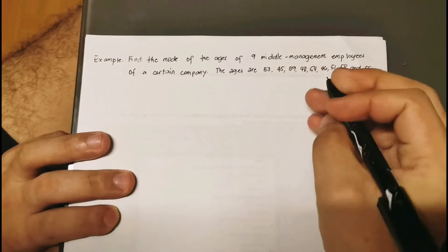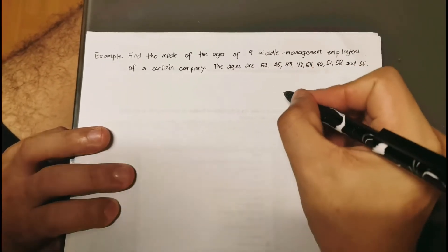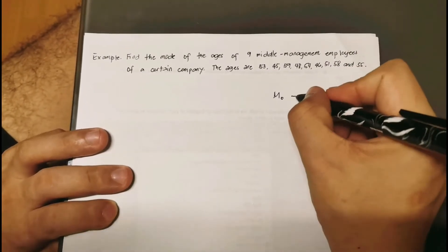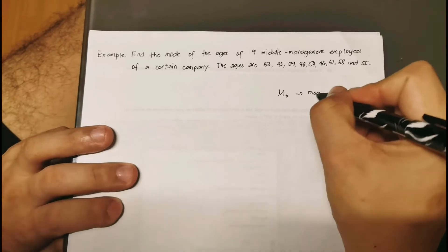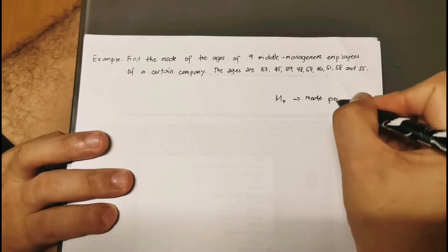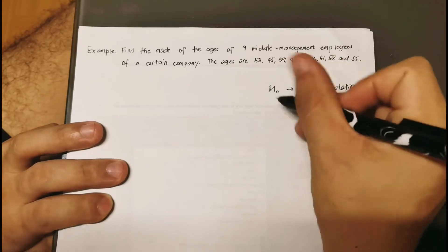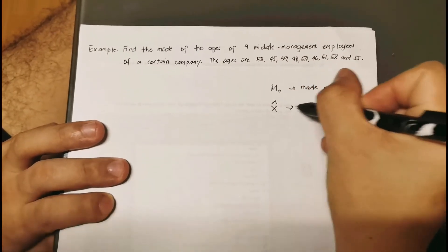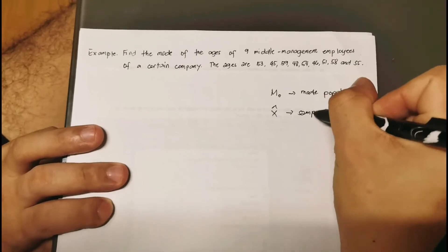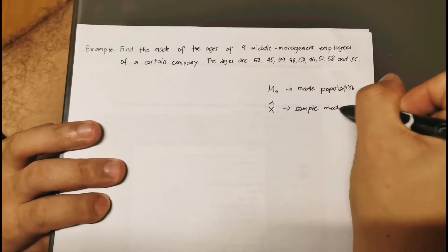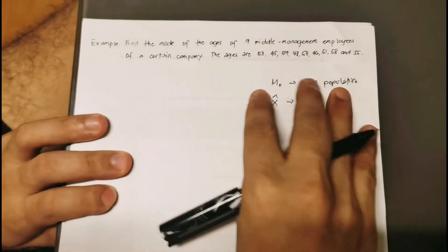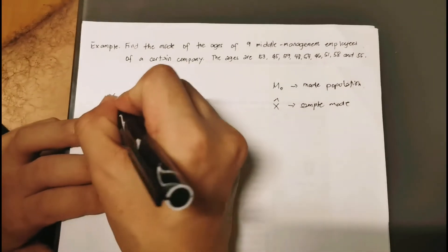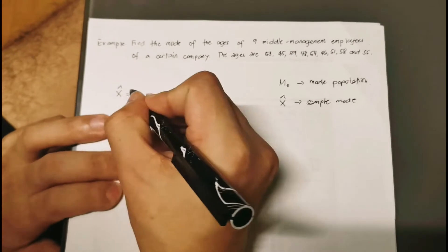Our notation for mode: M-sub-o is for the population mode, and x-hat is for the sample mode. Since this is a sample — a very small data set — we'll find our x-hat.